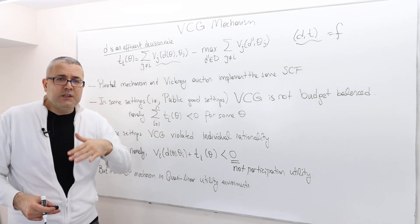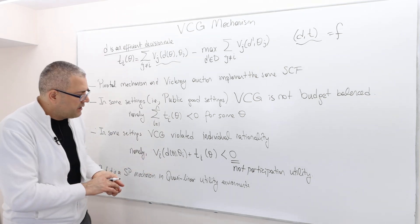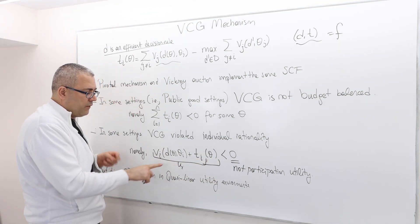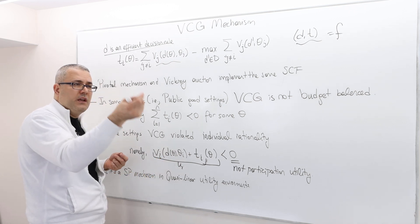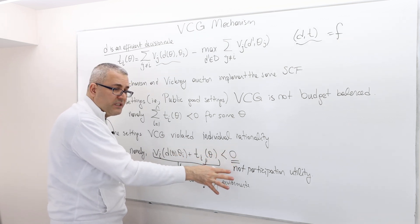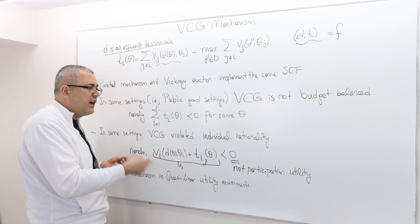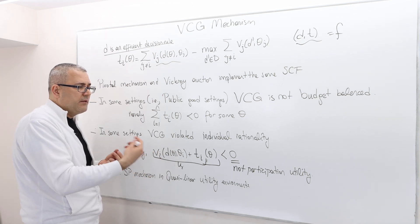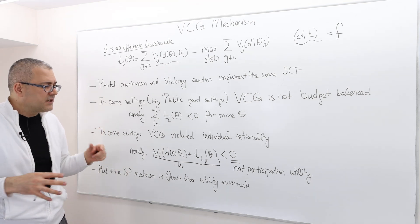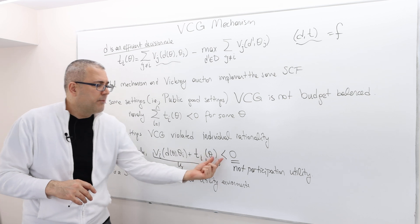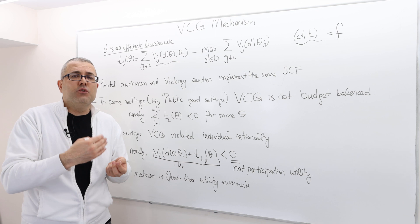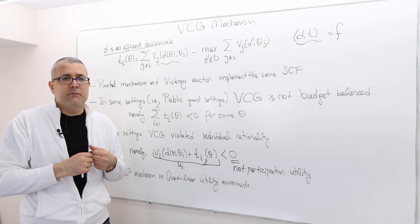Individual rationality means once we sort of normalize the payoffs in such a way that the utility of agent i, regardless of his declaration, regardless of the other's declarations, the decision rule and the transfer, his utility should be greater than or equal to zero. If this is the case for every theta, well then we say the mechanism is individually rational. But VCG fails to satisfy this meaning there are some environments where some agent's utility may actually be negative where zero represents the utility of not participating to the mechanism.